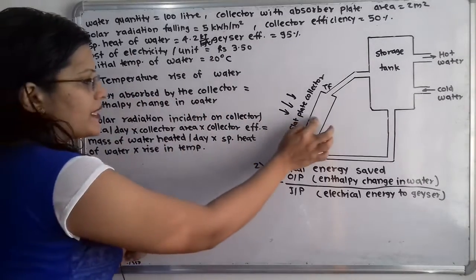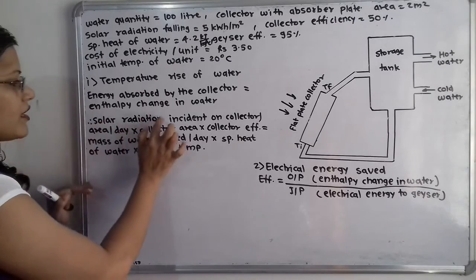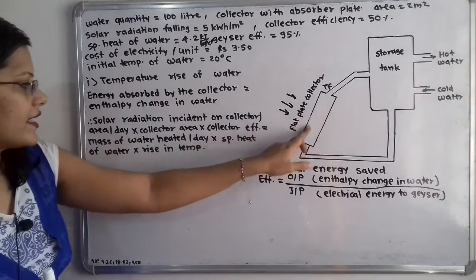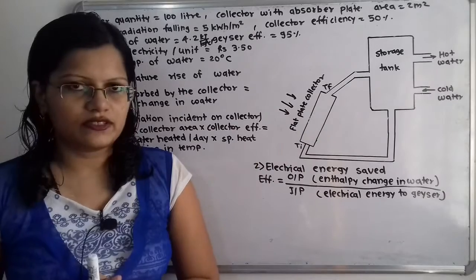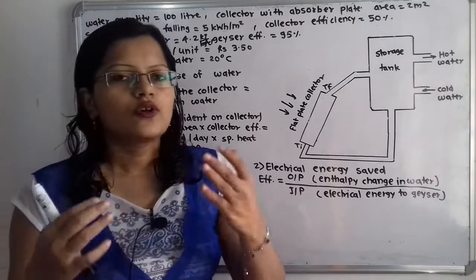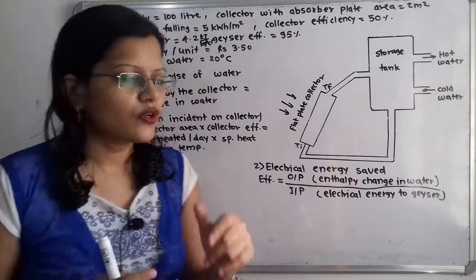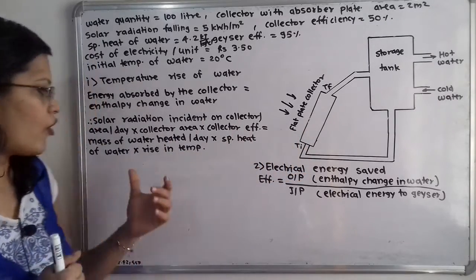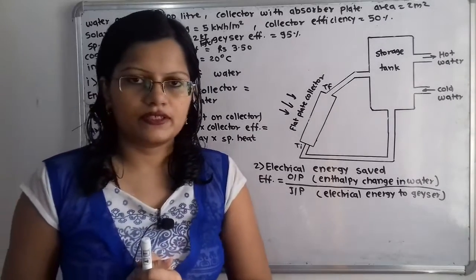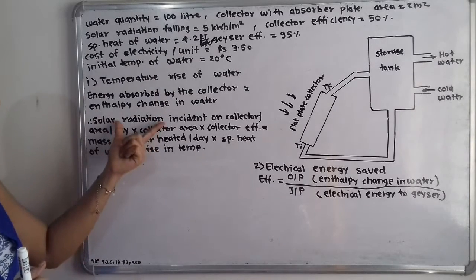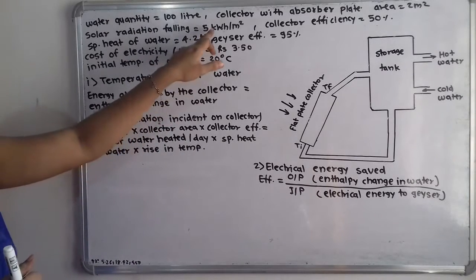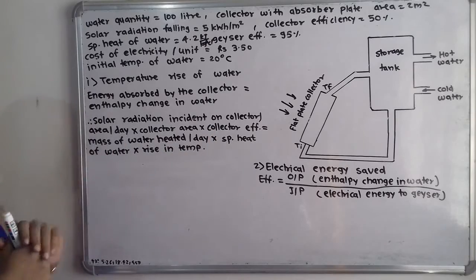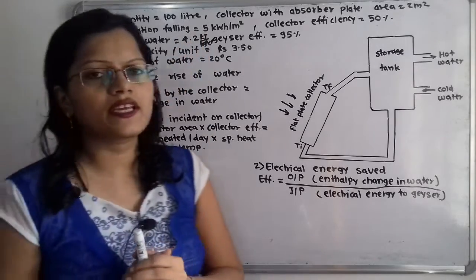To calculate energy absorbed by the collector, we write: solar radiation incident on the collector per unit area per day, multiplied by collector area, multiplied by collector efficiency. The enthalpy change in water equals mass of water heated per day multiplied by specific heat of water multiplied by the rise in temperature. The solar radiation is given as 5 kilowatt hour per meter square, and specific heat is 4.2 kilojoule per kilogram degree Celsius, so we need to convert 5 kilowatt hour into kilojoule.